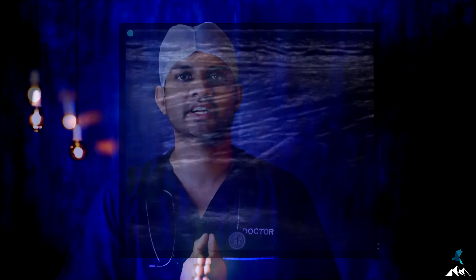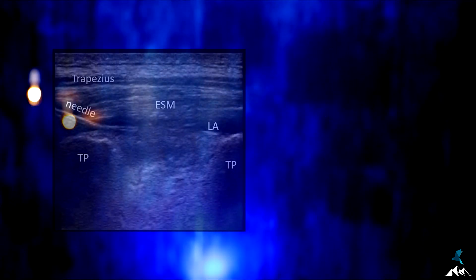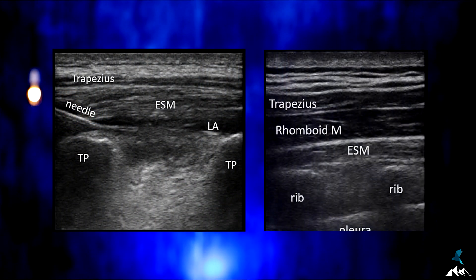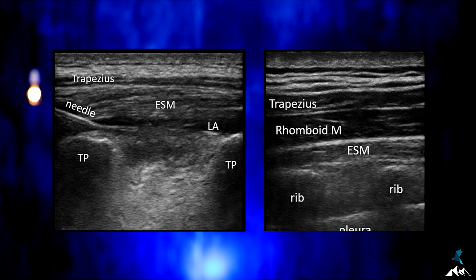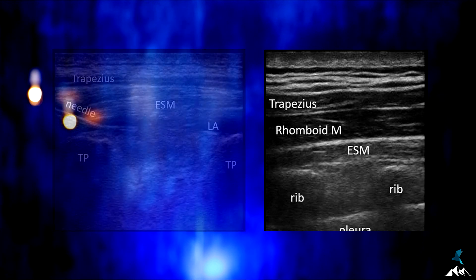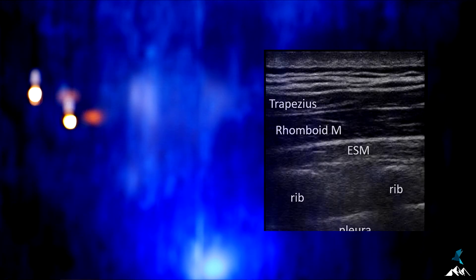In the parasagittal scan for erector spinae plane block, especially at the thoracic level when scanning laterally, there can be confusion between the transverse process and the rib. As seen in the image, the transverse process will be more superficial and more square-shaped. The rib will be deeper compared to the transverse process and more round in shape, and there will be an intervening pleura at this level.